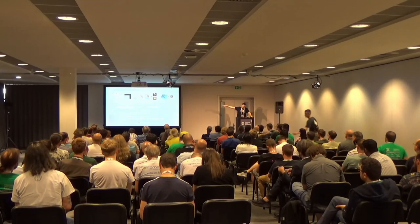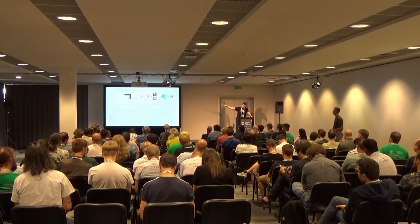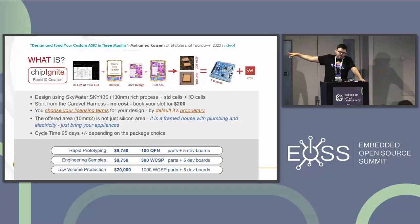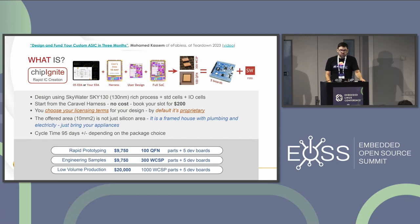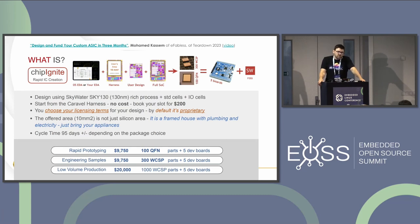With ChipIgnite, you get either 100 QFN or 300 chip-scale packages, plus five dev boards where those chips are put down. eFabless has also been thinking about ways to make it cheaper — for example, chip-down on PCB or wire bonding directly to the PCB — to lower the cost and make it quicker, since packaging adds a lot of time to the process.